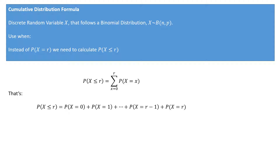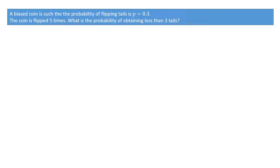A key word to remember: as soon as you see 'less than' in an exam or quiz question, more often than not you're dealing with the cumulative distribution formula. Now let's look at a couple of examples. We're told that a biased coin has a probability of obtaining tails of 0.3, the coin is flipped five times, and we're asked: what is the probability of obtaining less than three tails?